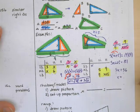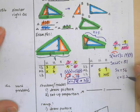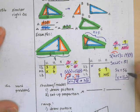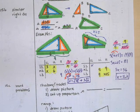Divide by 5 on both sides. You get 11.2. So that's how you solve similar right triangles. Thank you.